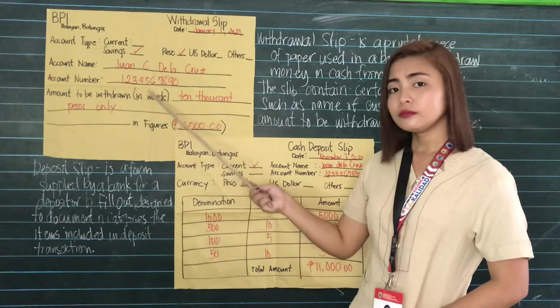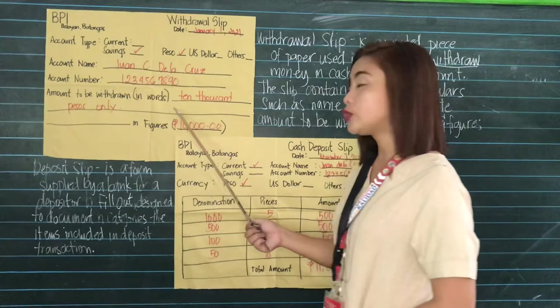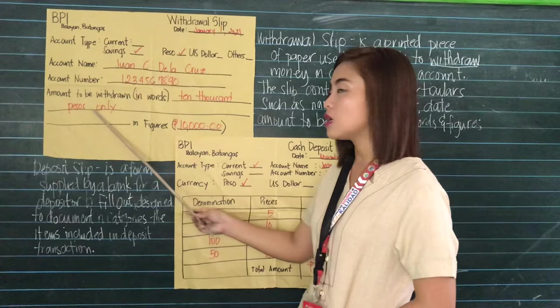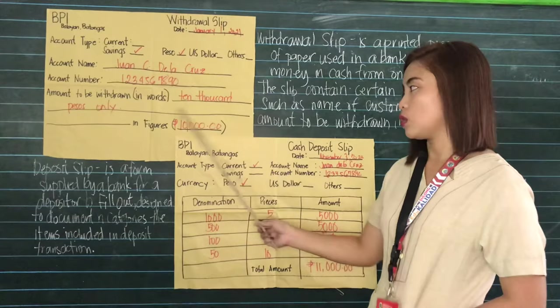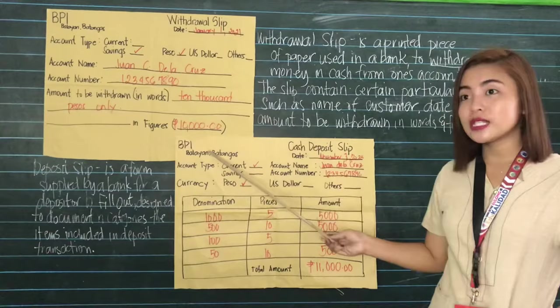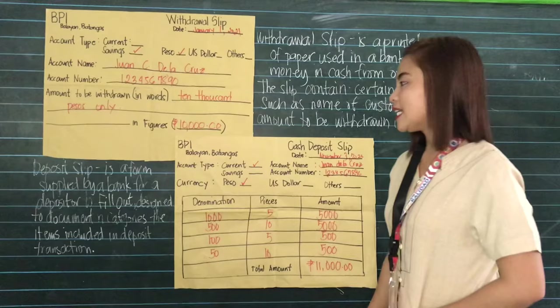The amount to be withdrawn in words is the amount that you are going to withdraw from that particular account. So that would be P10,000 only. In figures, that would be P10,000. Here is the example of a withdrawal slip and how to fill out a withdrawal slip.